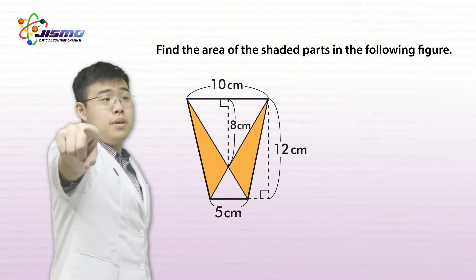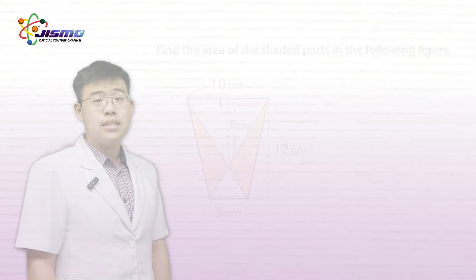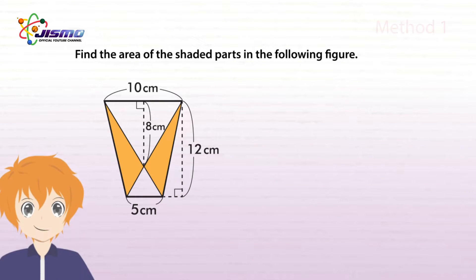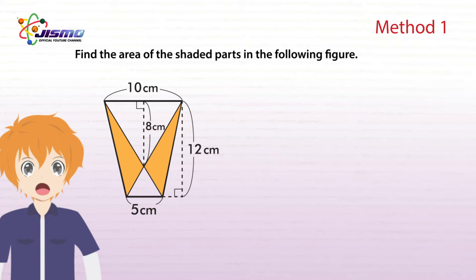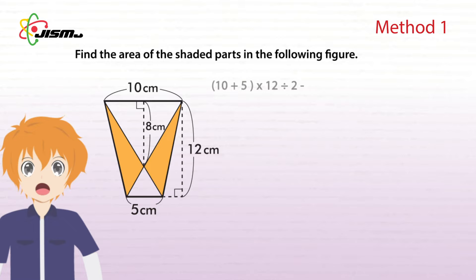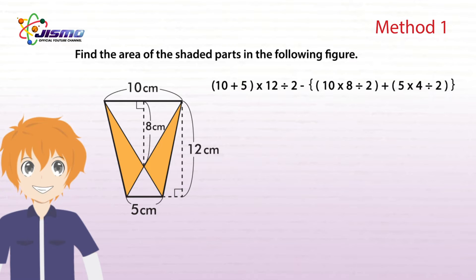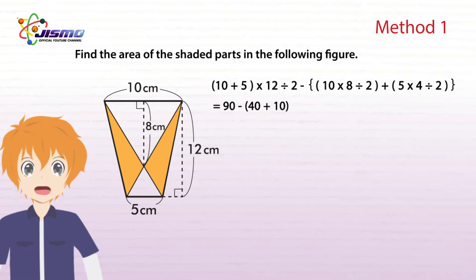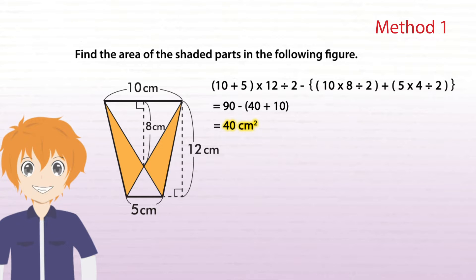Mooji Sensei! Yes, Jimin! What's the answer? It is the area of trapezoid minus the areas of the unshaded region, which is (10 + 5) × 12 ÷ 2 minus (10 × 8 ÷ 2) + (5 × 4 ÷ 2), which equals 90 minus 40 plus 10. That equals 40 square centimeters. Nice, Jimin! Well done!